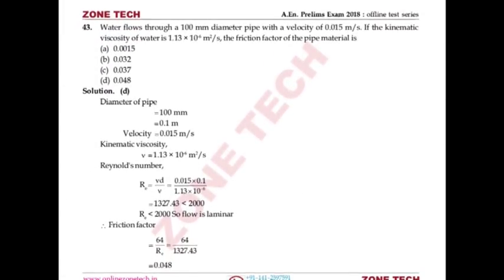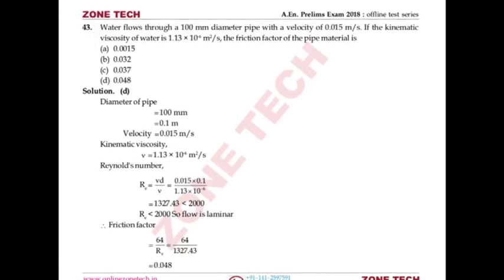Question number 43: Water flows through a 100 mm diameter pipe at 0.015 m/s. Kinematic viscosity = 1.13 × 10⁻⁶ m²/s. Find friction factor. First calculate Reynolds number: Re = VD/ν = 1327.43, which is less than 2000, so flow is laminar. Friction factor = 64/Re. Solving: friction factor = 0.048. Answer is D.